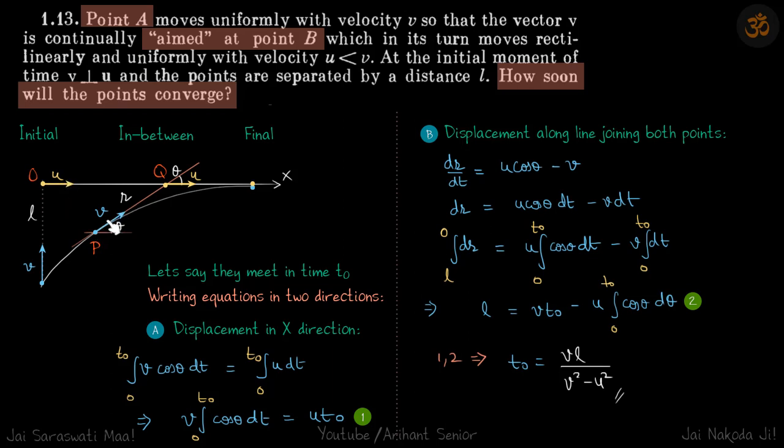Now in between it will look something like this. So this is still going on the same path and this is headed towards q and eventually they will both meet. This is the final position. So we need to find the time taken for them to meet. Let's say they meet in time t0.